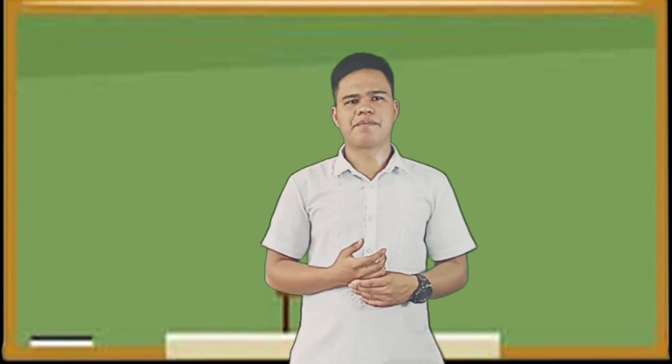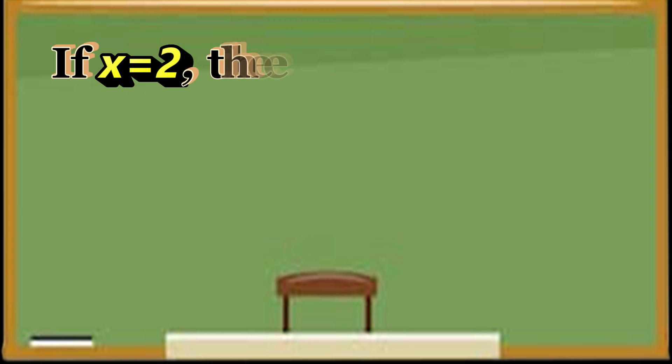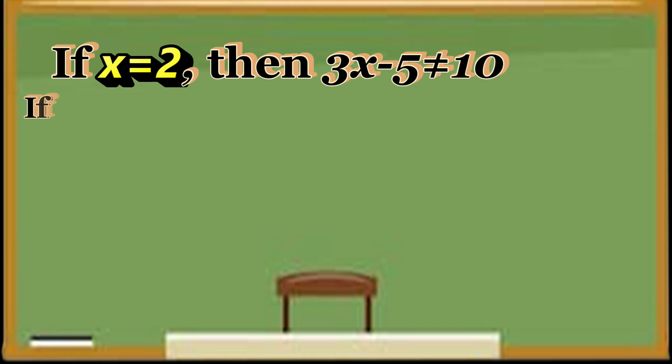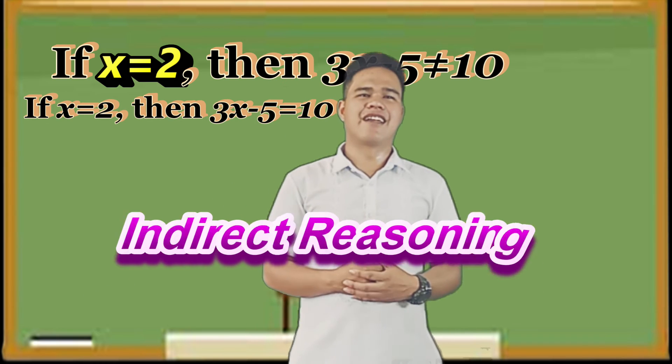Example number 4: If X equals 2, then 3X minus 5 equals 10. This is indirect reasoning.